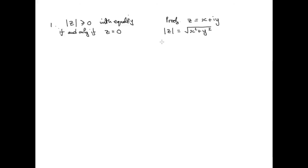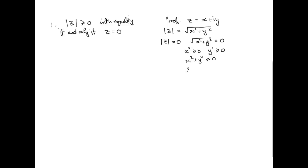Let's do this both ways. Suppose the modulus is equal to zero — in other words, suppose the square root of x squared plus y squared equals zero. Now x and y are real numbers, so the only way x squared plus y squared equals zero is if x and y are both zero. If either is non-zero, the quantity will be positive. So modulus equal to zero implies the real part is zero and the imaginary part is zero.